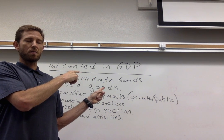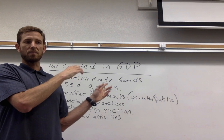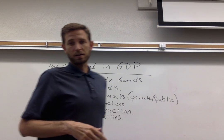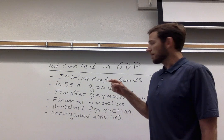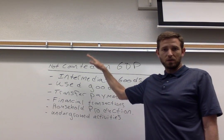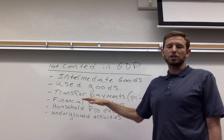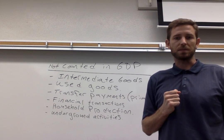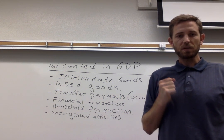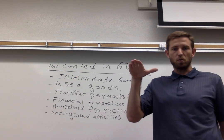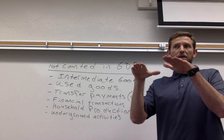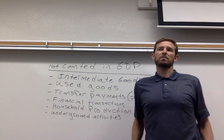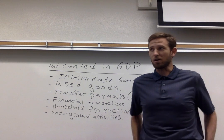I've listed here on the board some items that don't show up in GDP calculations that you ought to be aware of. The principle behind this — the reason why we don't include these things in GDP — is because we want to avoid the problem of double counting. Double counting means that an item would show up in GDP calculations twice, and as a consequence it would overstate the amount of production that's actually occurring in the economy.